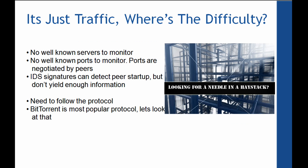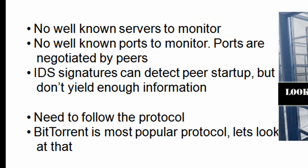So if it's just traffic, where's the difficulty in monitoring and finding out what's happening? Well, there are no known well-known servers to monitor — as we saw earlier, it's clients connected to clients, so there isn't a particular set of servers we can focus on. There are also no well-known ports to monitor. If you want to monitor web traffic you could focus on port 80, but with BitTorrent the ports are negotiated by peers and are completely random connections.